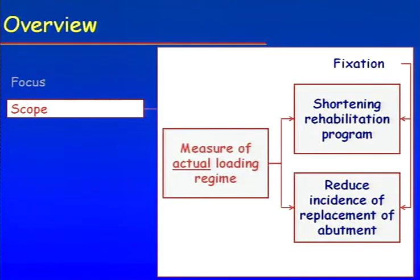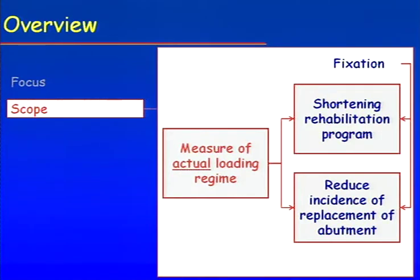In order to do that, we need to measure the actual load regime — and I underline 'actual' because that's probably the key word. If we do measurements in a purely experimental way, we may get comprehensive results that are not necessarily reflective of what amputees are actually doing in their normal life. Therefore, if we base the design of the implant or the fixation on data collected only during gait analysis, that might not be sufficiently strong or thorough.